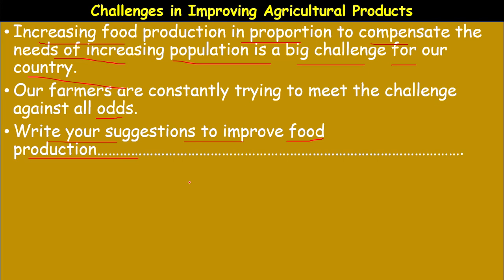Agricultural land should never be converted for construction purposes — that must be one suggestion. Next, farmers often face problems in selecting the seed. Being an educated farmer, one has to select good quality seed. Fifty percent of the success of agriculture depends upon the seed selected. Growing seasonal crops, proper irrigation methods, proper harvesting methods, and proper storage methods — all these should be followed.